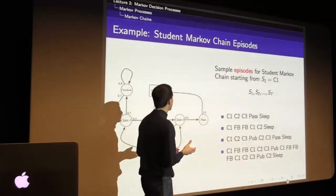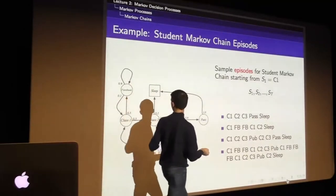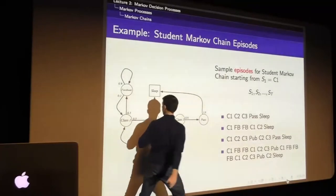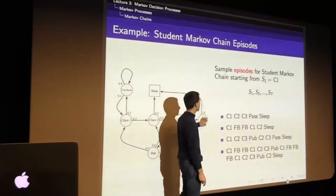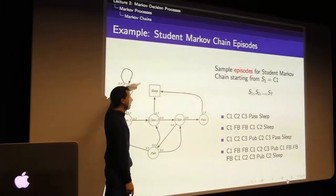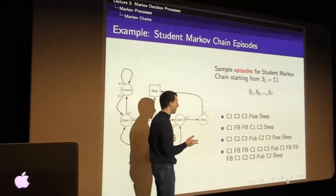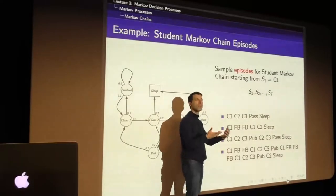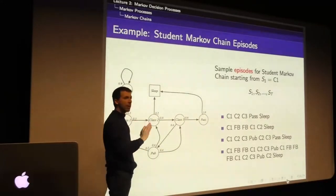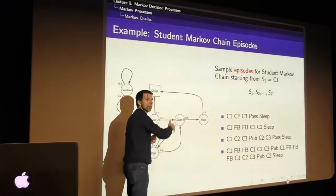Now with this student Markov chain, let's think about what it means to take samples. A sample is a sequence of states - for example, class one, class two, class three, pass, fall asleep. Or: class one, Facebook, Facebook, class one, class two, fall asleep. These are variable length random sequences drawn from these dynamics. That's what it means to have a random process - you get a random sequence drawn from a probability distribution over sequences of states.